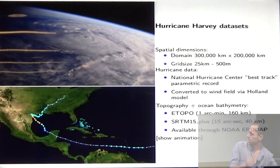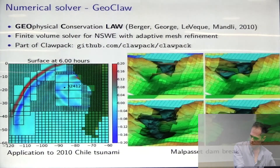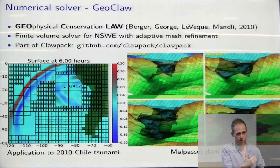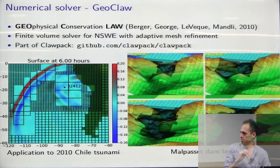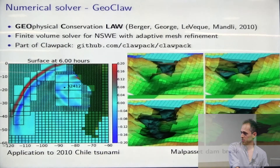Now I'll talk about some applications. Geoclaw is a combination of Python and Fortran — mostly Fortran. Python is mostly a wrapper to set up the configuration files. It's nice and easy to edit what you want out of the simulation. The biggest libraries used are NumPy and Matplotlib, but the bulk of it is still in Fortran, which is actually pretty actively used in the scientific community.